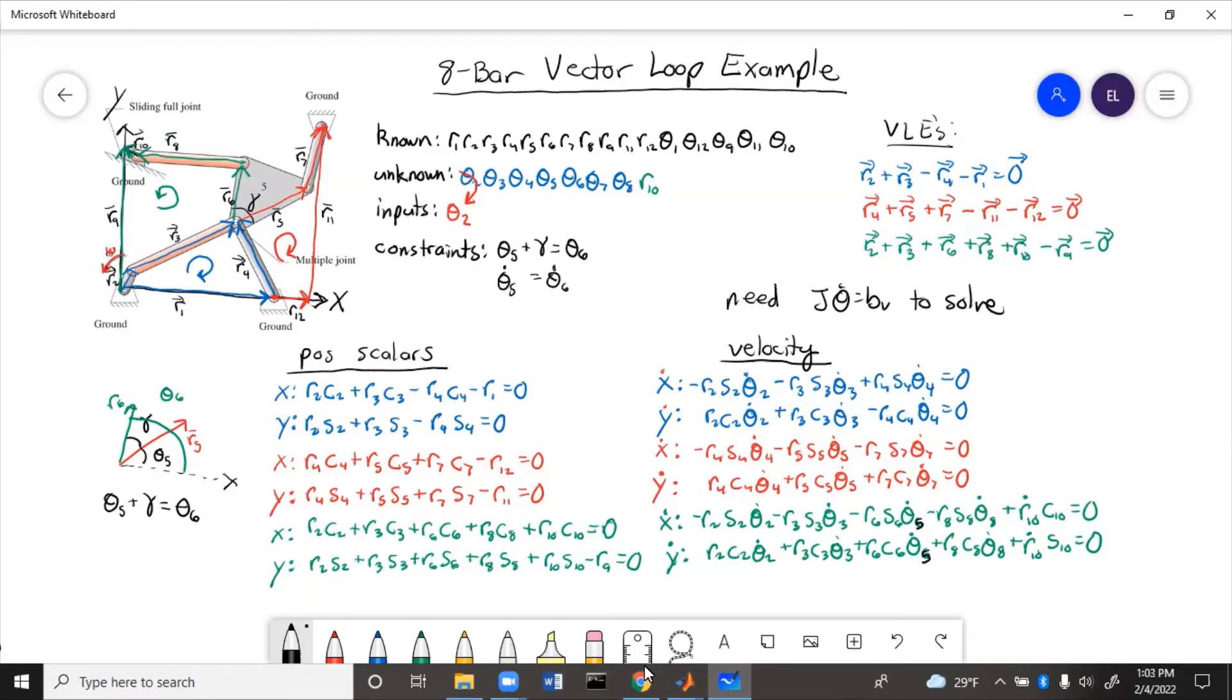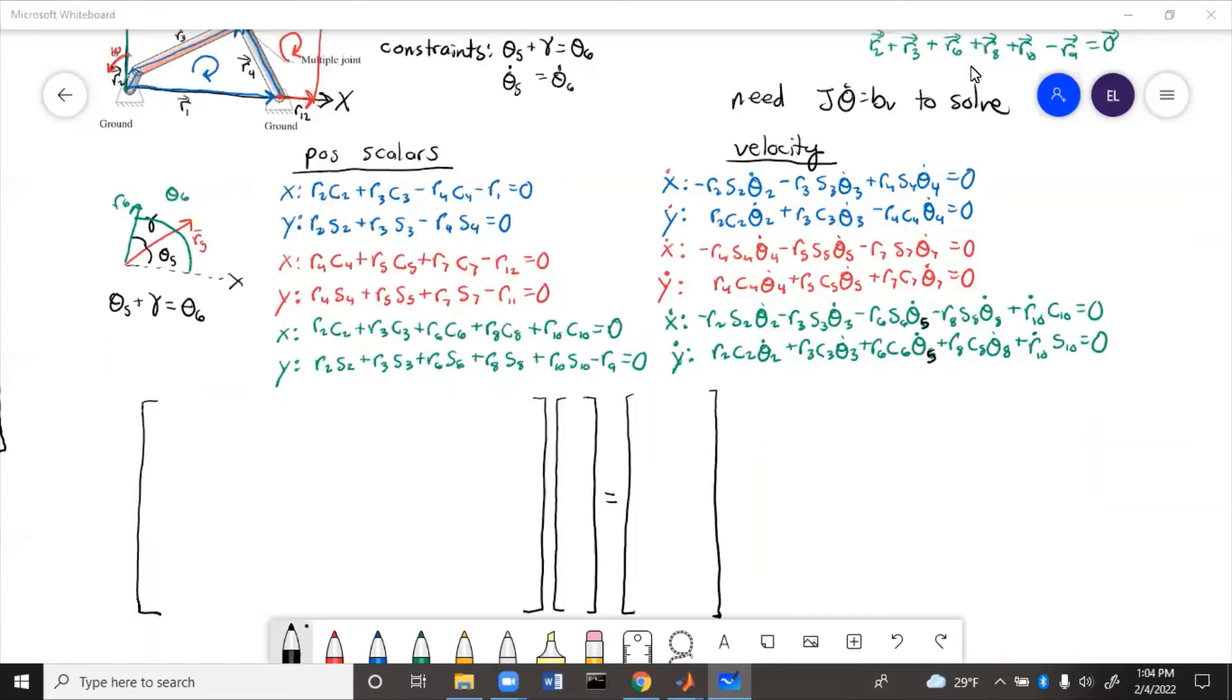So now let's get that into matrix form. If we put this into form J theta dot equals B, first let's fill out our theta dot matrix. So that will be all of the unknowns. We'll have theta dot plus the theta 2 dot is our input. So we'll start with theta 3 dot,